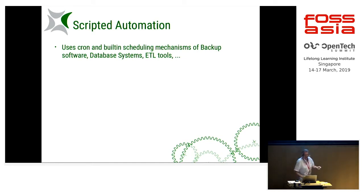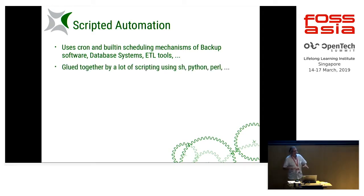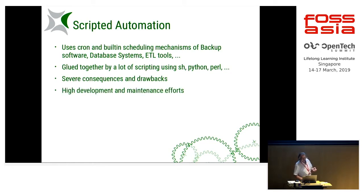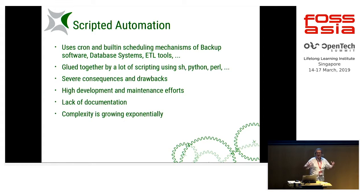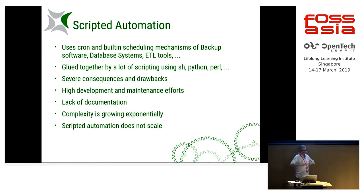This all gets glued together by a lot of scripting, and this has consequences and drawbacks: high development costs and maintenance efforts, lack of documentation, and a complexity which is growing exponentially. Because as systems rise, every new process to integrate gets huger and there are more interconnections to take care of. Scripted automation just doesn't scale — if it reaches a certain point of complexity, you are in quite big danger that it will just break down.